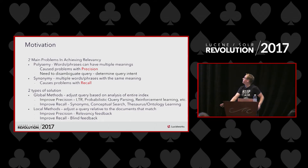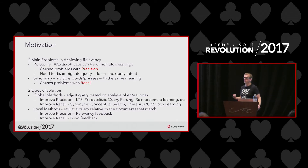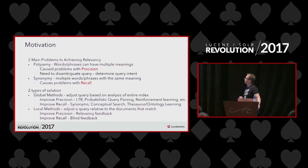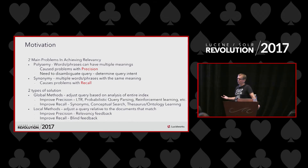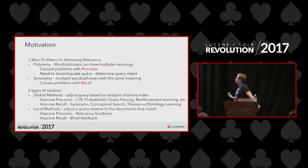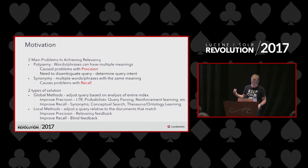There are two main problems in achieving relevancy. There's the problem of ambiguity or polysemy, where words or phrases can have multiple meanings — this causes problems with precision. And then there's the problem of synonymy, where words or phrases have the same meaning but are expressed differently — that causes problems with recall. There are two types of solutions: global methods and local methods. Global methods adjust the query based on analysis of the entire index or some other dataset — examples include learning to rank, probabilistic query parsing, synonyms, and conceptual search. Local methods differ in that they look at the results in your index to a given query and try to improve relevancy by using those results to improve future results. This is termed relevancy feedback.